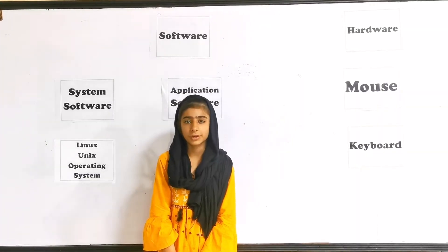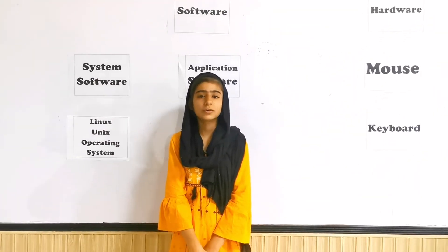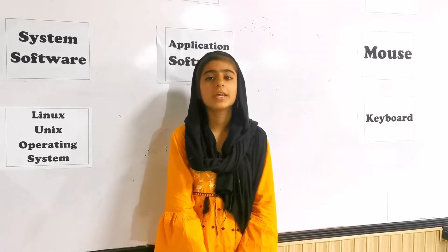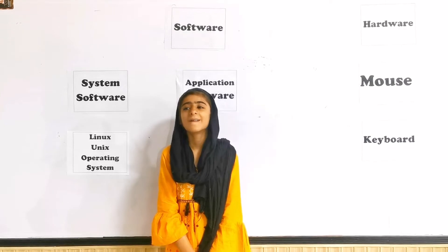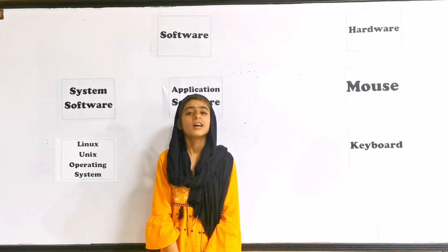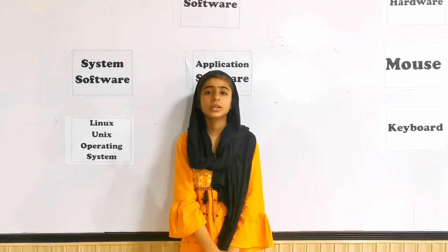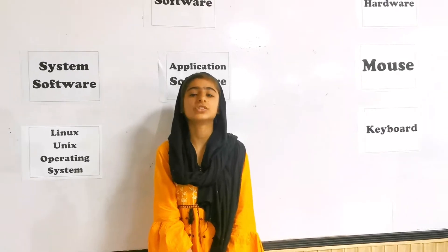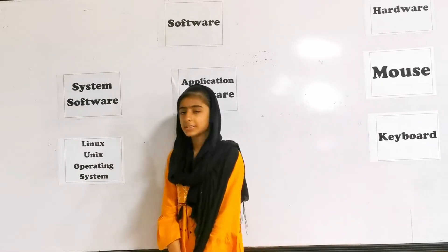I will describe the types of software. Number one: system software. System software is software designed to provide a platform for other software. It is a type of computer program designed to run a computer's hardware, software, and application programs. Example: Linux operating system.